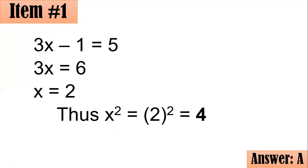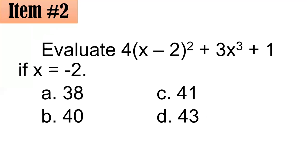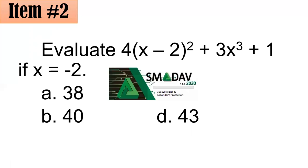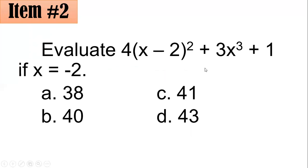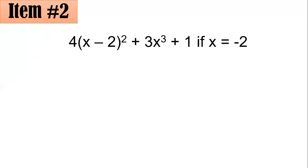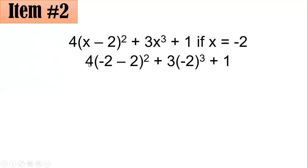Let's proceed with number two. Evaluate 4 times the square of (x minus 2) plus 3x cubed plus 1, if x equals negative 2. Which of these — 38, 40, 41, or 43 — is correct? When we speak about evaluating, we substitute the value of x and simplify. So with x equals negative 2, by substitution that becomes 4 times (negative 2 minus 2) squared plus 3 times negative 2 cubed plus 1.